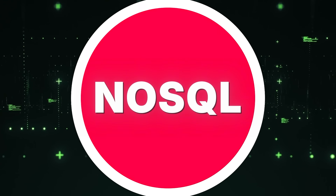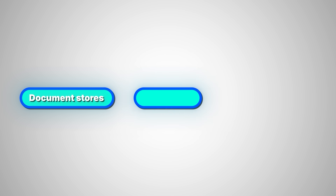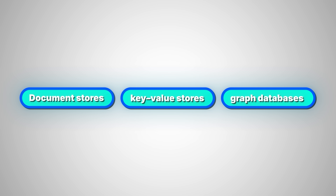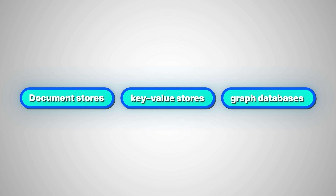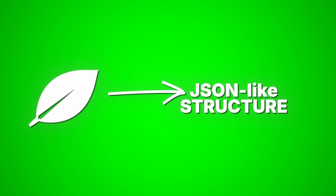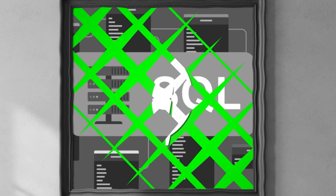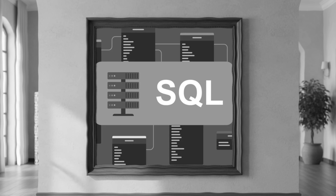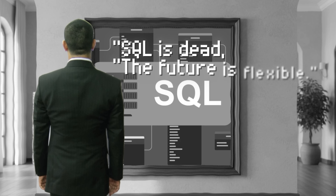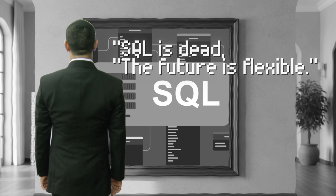So a rebellion began: NoSQL. Document stores, key-value stores, graph databases — each promised freedom from schema and scalability without joins. MongoDB became the friendly face of that movement. Its JSON-like structure matched how web developers already thought. No tables. No rigid schema. Just documents. It felt modern, fast, and forgiving. For a few years, it looked like SQL might fade into history. 'SQL is dead,' people said. 'The future is flexible.'